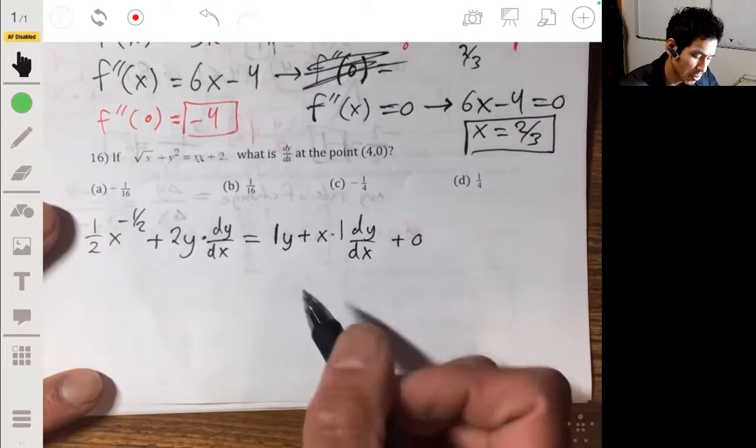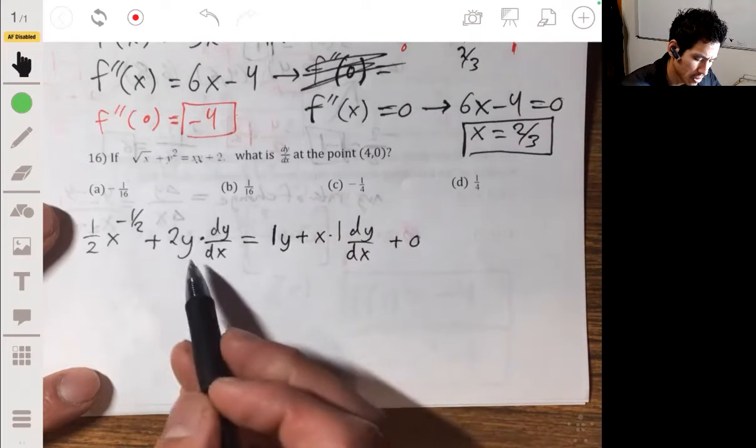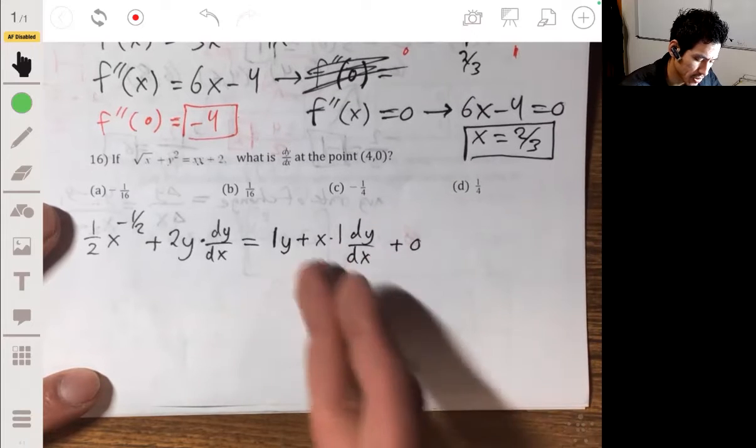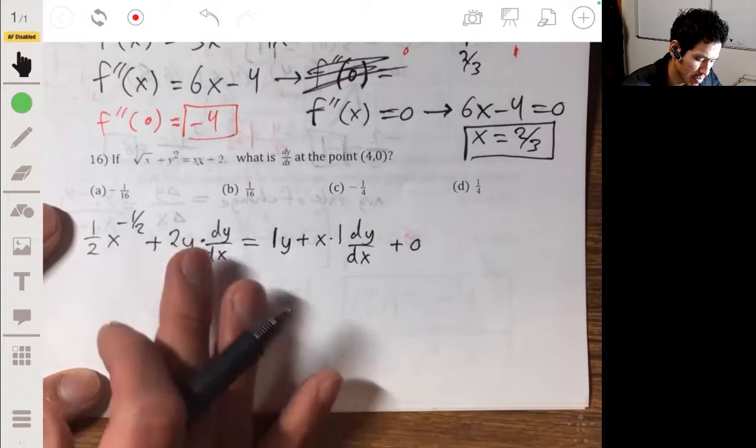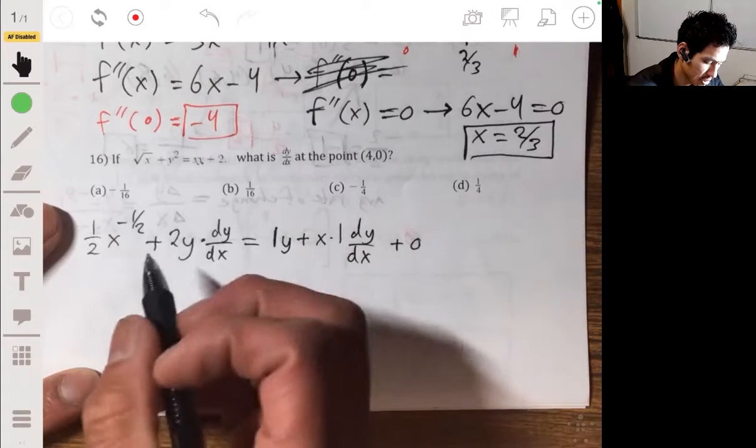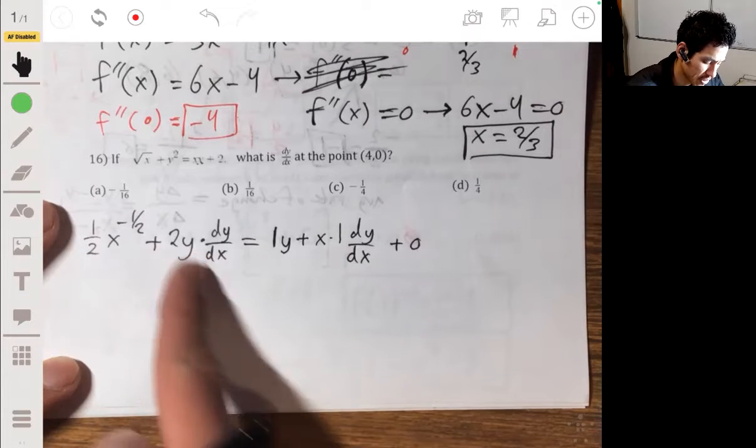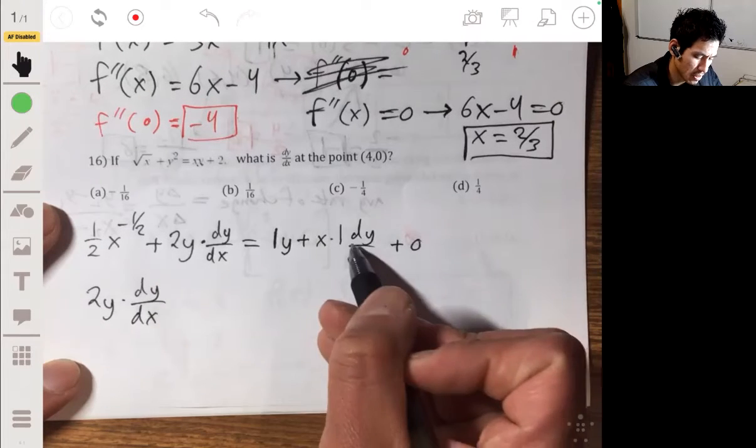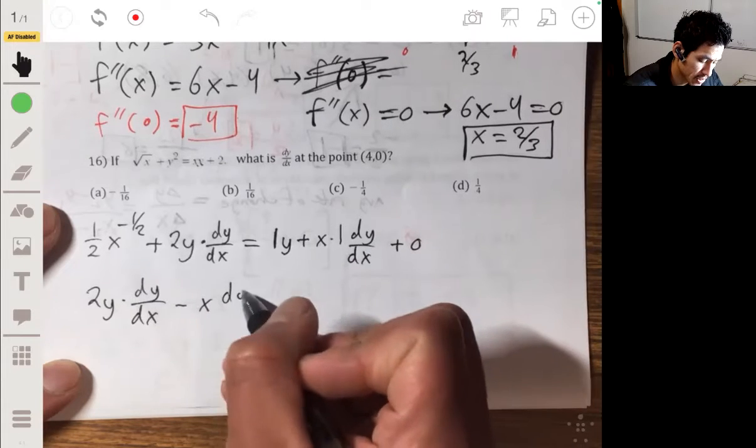And then at this point you want to basically just solve for dy/dx, and then plug in 4,0. So treat dy/dx like it's a variable. So I'm going to subtract this whole thing to the left, and I'm going to bring dy/dx to the left, so I'm going to take away this, so I'm bringing it to the left. So then I have 2y dy/dx minus x dy/dx.